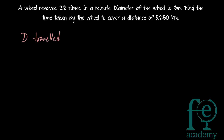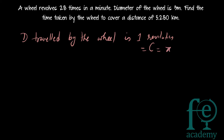The distance traveled in one revolution equals the circumference of the wheel. Since diameter is given, the formula is πd, so distance per revolution = (22/7) × 3 meters.